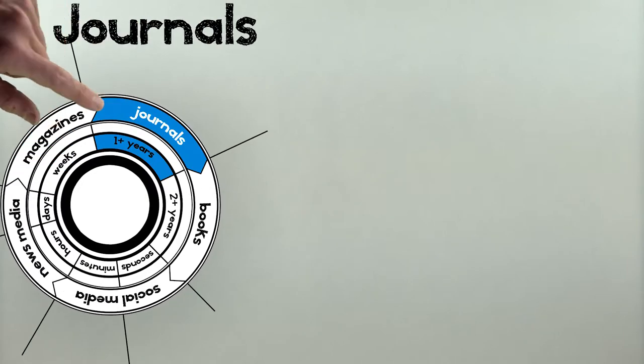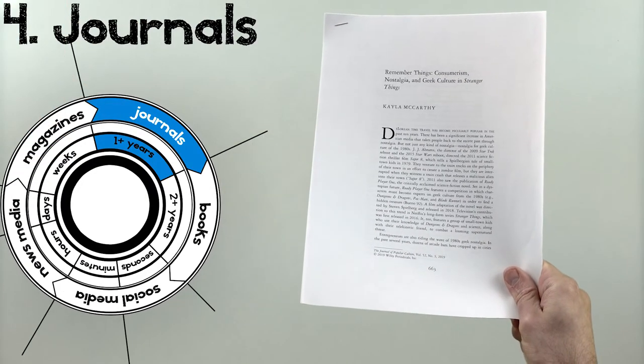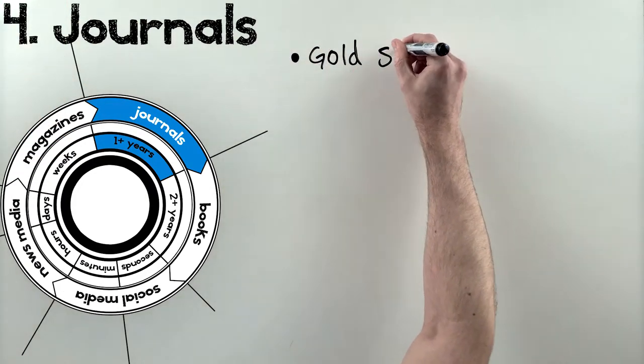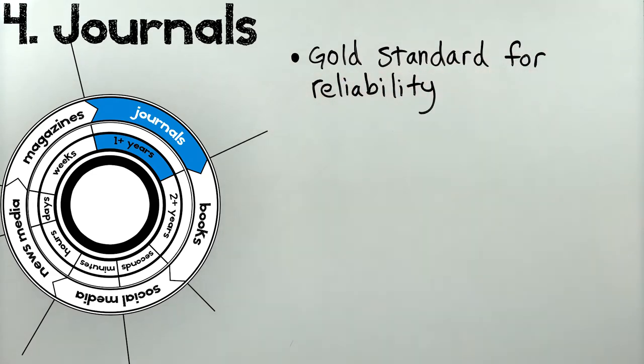The fourth stage is journal articles, which apply academic rigor to the topics they analyze, and are considered the gold standard of reliable information. They have to pass peer review, in which experts pick the article apart and demand revisions until they're satisfied.